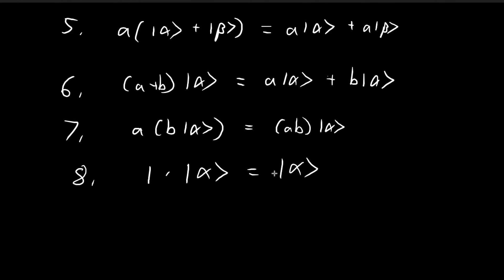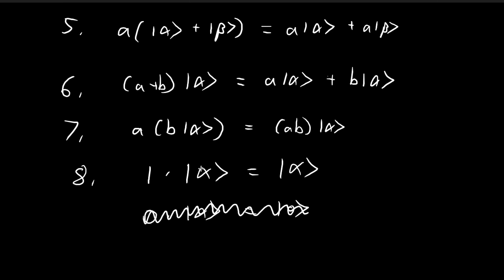In Griffiths' book, an additional requirement is included in the eighth axiom: that zero times alpha should give the null vector. However, this is not strictly necessary, as it can actually be proved using the eight axioms already listed. Perhaps in a later video I can show how to derive this property from the existing axioms.